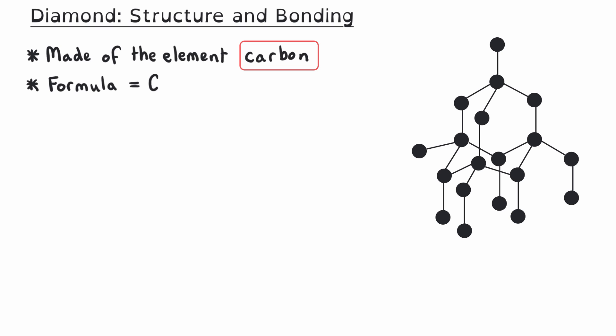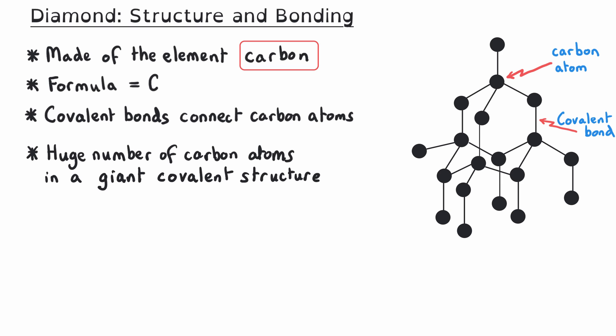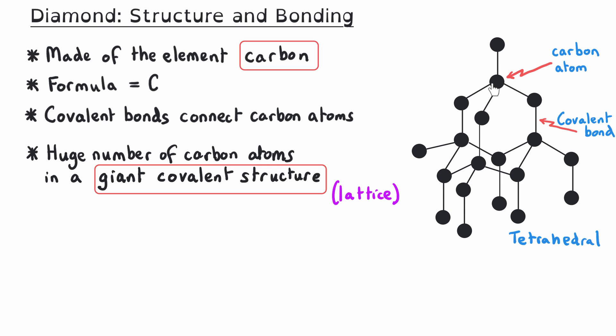In a diagram of diamond, the carbon atoms are usually represented as black circles, with sticks coming out of them representing covalent bonds connecting the carbon atoms together. Covalent bonds are shared pairs of electrons that hold the carbon atoms in place. The structure of diamond contains a huge number of carbon atoms in a giant covalent lattice — a regular repeating pattern. That repeating pattern is a tetrahedral shape around each atom of carbon. I'm just showing a small section of a larger lattice here, but this continues in three dimensions, covering billions and billions of carbon atoms.